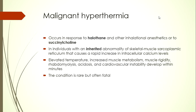Malignant hyperthermia occurs in response to inhalational anesthetics like halothane or depolarizing muscle paralyzing agents like succinylcholine. Individuals with an inherited abnormality in skeletal muscle sarcoplasmic reticulum experience rapid increase in intracellular calcium, leading to increased metabolism, muscle stiffness, heat generation, elevated temperature, rhabdomyolysis, acidosis, and cardiovascular instability within minutes. It should be recognized immediately and anesthesia aborted, as it is rare but often fatal.